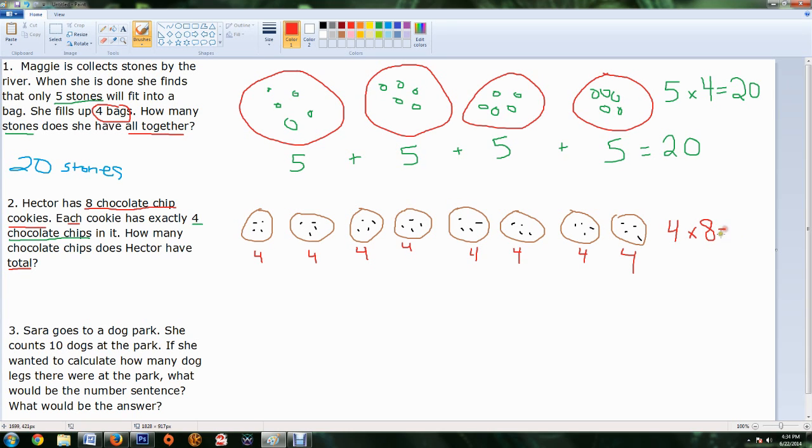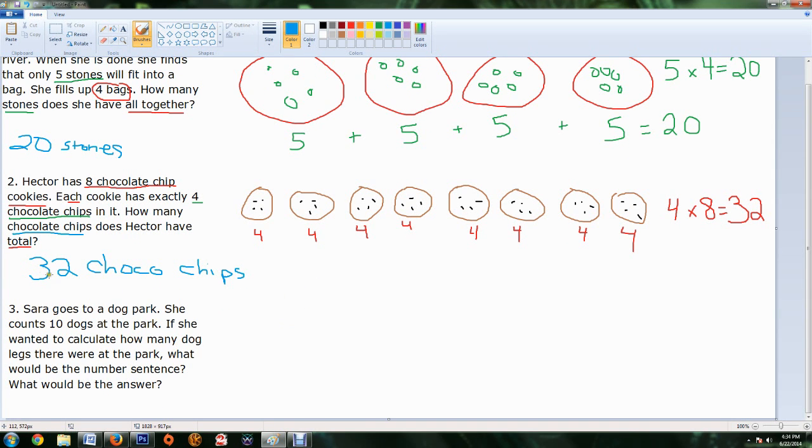And since we are getting good at our multiplication tables, we should know what four times eight is, but if we need to skip count, four, eight, twelve, sixteen, twenty, twenty-four, twenty-eight, thirty-two. So, thirty-two. All right. So, our answer over here is going to be thirty-two. Now, can I just leave it as thirty-two? Thirty-two? What is it? Thirty-two cookies? No. It's thirty-two chocolate chips. So, I'm just going to write cocoa chips for right now, because I'm writing with a mouse, and that's difficult to do. All right. But you get the idea. Thirty-two chocolate chips.